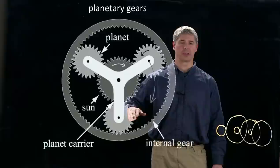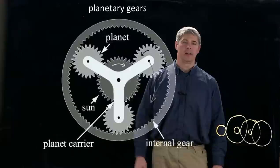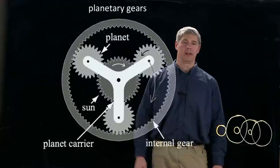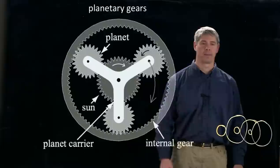And so the output shaft is attached to this triangle here. So the inner one spins quickly, the planets move slowly on the outside, and the planets carry with them this Y-shaped output gear.